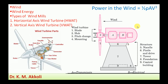The power present in the wind can be expressed as P = ½ρAV³, where ρ is the density of the air, A is the area through which the wind is flowing, and V is the velocity of the wind.